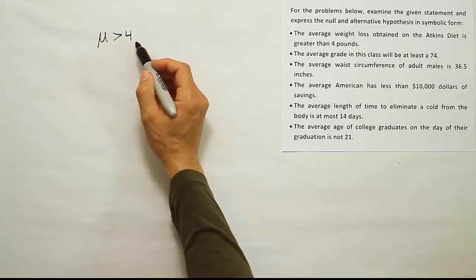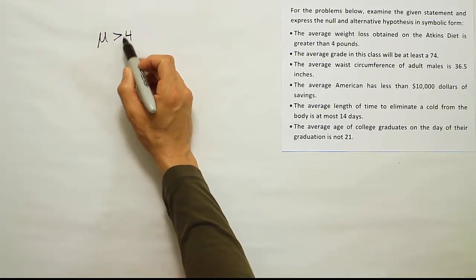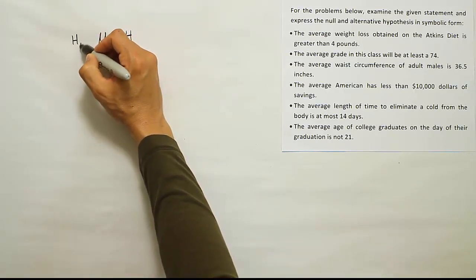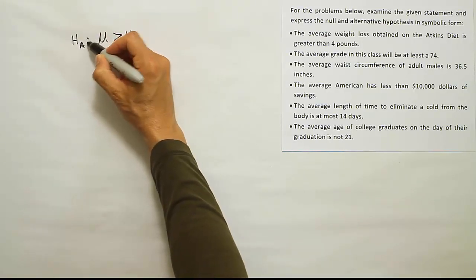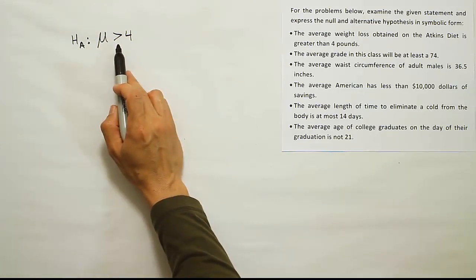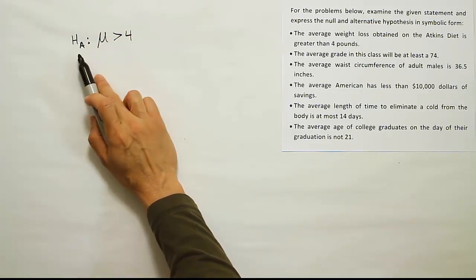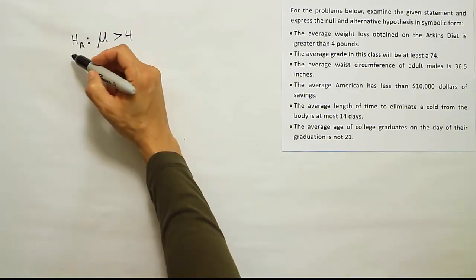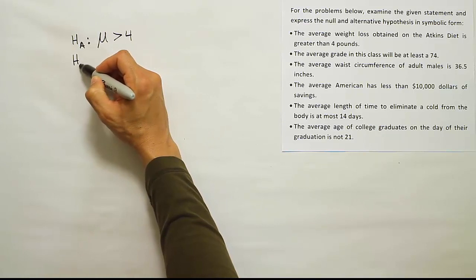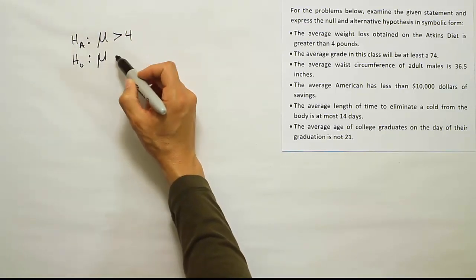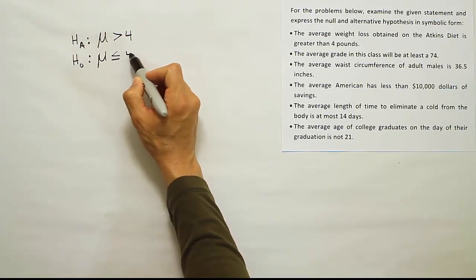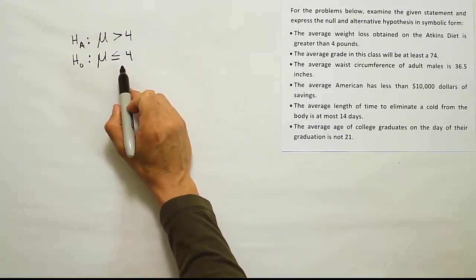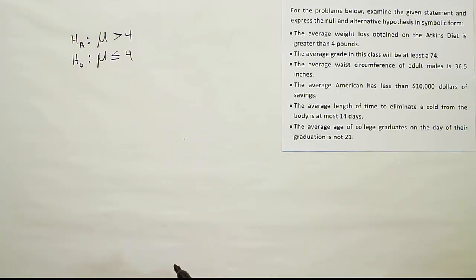Now if that's the case, we want to recognize that the greater than symbol is a symbol that Hₐ uses, the alternative hypothesis. The alternative hypothesis uses the symbol greater than, less than, or not equal to. So in this case, this claim here is Hₐ. That means the corresponding null hypothesis is going to be that the mean is less than or equal to four, because if you're not greater than four as a number, you must be less than four or equal to it.